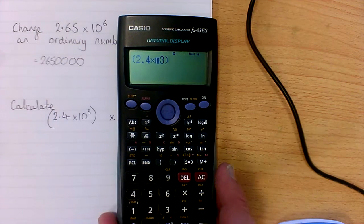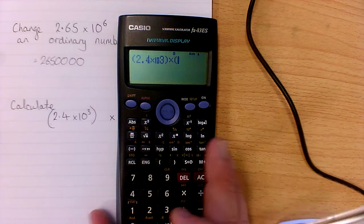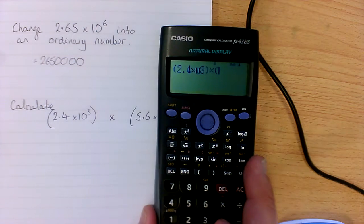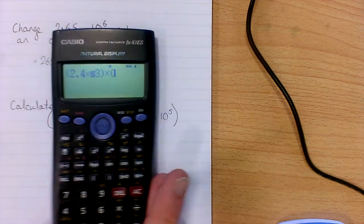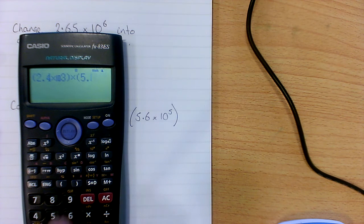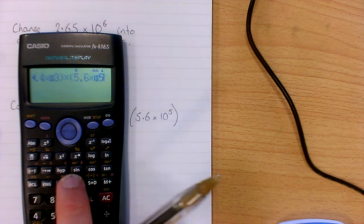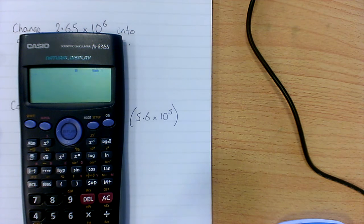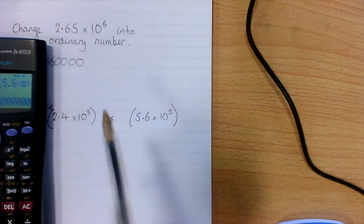Now my calculation asks me to multiply. I'm going to put my second lot of brackets in: 5.6 — I'll move the calculator here so you can see — 5.6 X10X to the 5, close my brackets, press equals, and it gives me an answer.